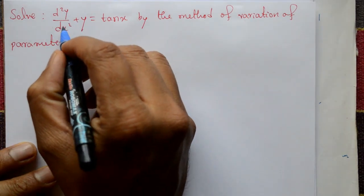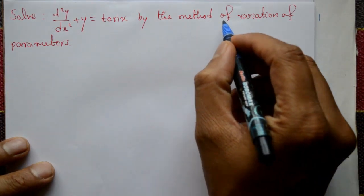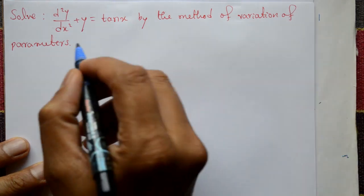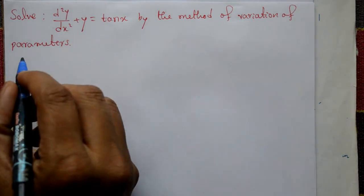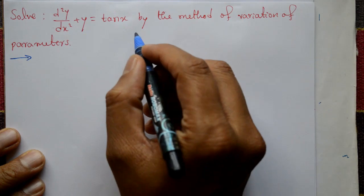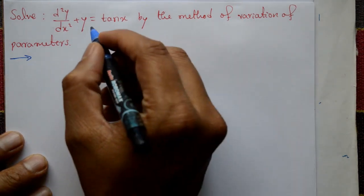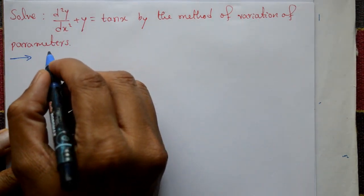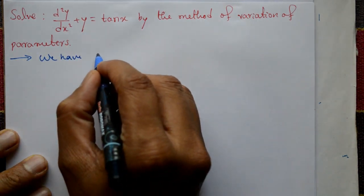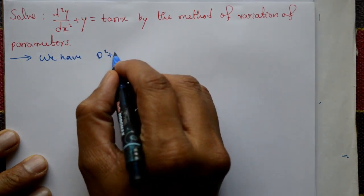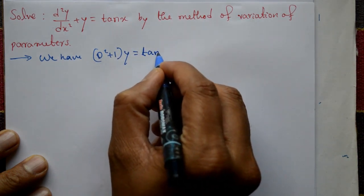Solve d²y/dx² + y = tan x by the method of variation of parameters. This problem is very simple and we require a complete solution. The given equation is written in the form (D² + 1)y = tan x.